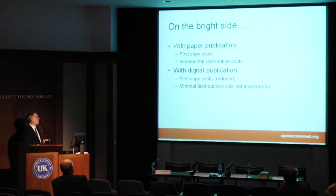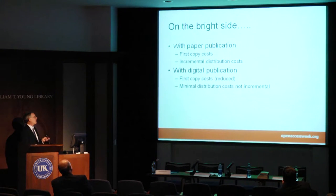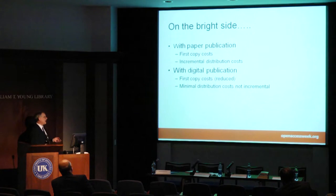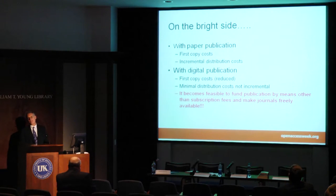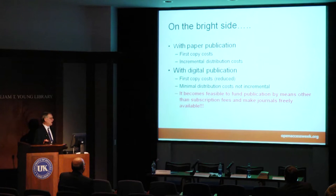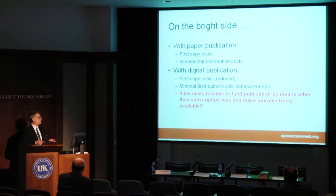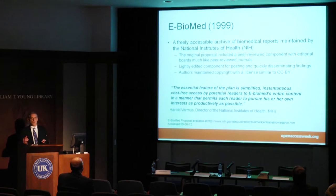With digital publication, there's always a first copy cost — it's expensive to publish and takes professionals. But most costs are first-copy costs; there's no incremental cost per copy as there is with paper. The nice thing about digital publication is that we can now fund it by other means and then make journals freely available, avoiding the access problems I just described. I want to jump forward and talk more about the history of open access publishing.